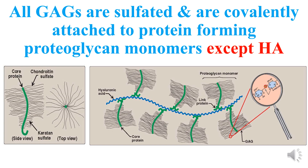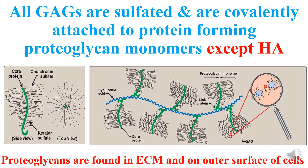Glycoproteins and proteoglycans both contain proteins and carbohydrate units covalently bonded to the protein, varying in size from monosaccharides to polysaccharides. The key difference is that proteoglycans have long unbranched chains with repeating disaccharide units, while glycoproteins have short, highly branched glycans with no repeating units. Proteoglycans are found in the extracellular matrix and on the outer surface of cells.